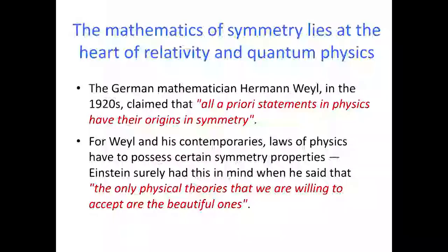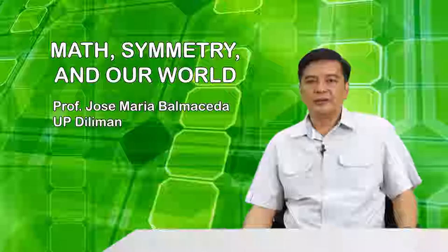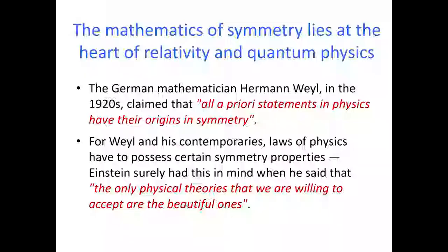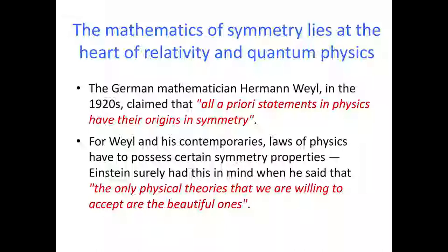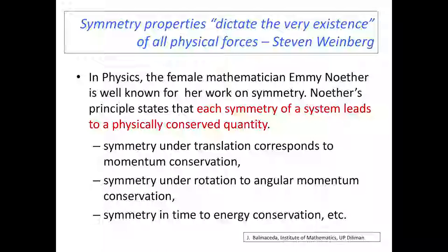Mathematicians recognize the power of symmetry, but so did physicists. According to the German mathematician Hermann Weil, all a priori statements in physics have their origins in symmetry. Symmetry is at the heart of relativity and quantum physics. Laws of physics have to possess certain symmetry properties. Surely this is what Einstein had in mind when he said that the only physical theories that we are willing to accept are the beautiful ones.